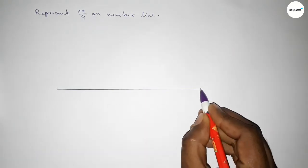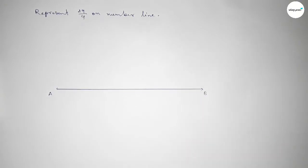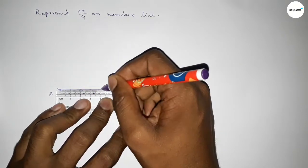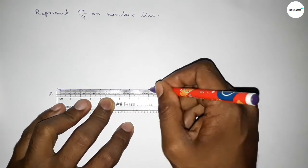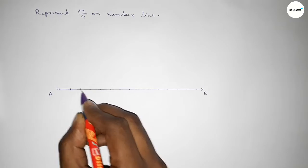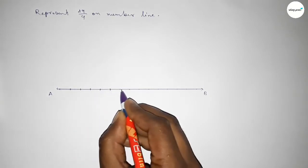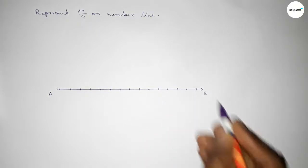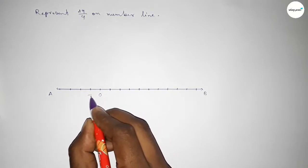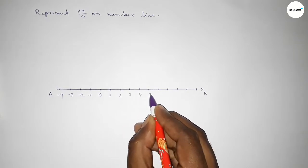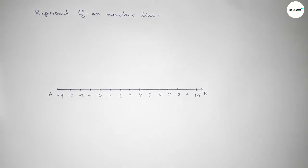First of all, we have to draw the number line. So drawing here a line, taking arrow marks on both sides — this is the AB line. Now we have to mark the numbers on the line using a scale. Taking the starting number 0, this side minus 1, minus 2, minus 3, minus 4, and this side plus 1, 2, 3, 4, 5, 6, 7, 8, 9, 10.